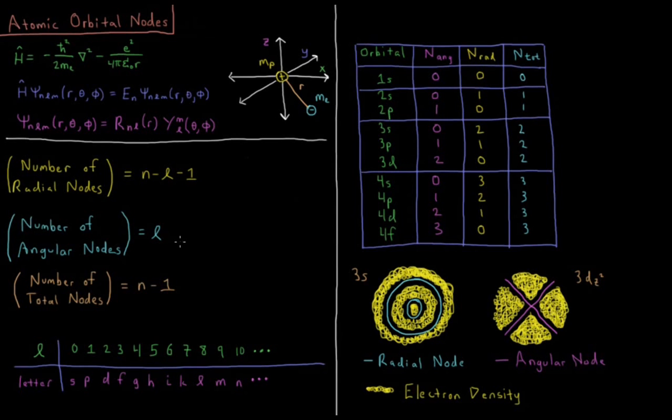For 2P, we have one angular node, L equals one for P, N equals two. So we have zero radial nodes and one total node. 3S has two radial nodes, 3P has one radial node, and 3D has zero. But 3P has one angular node and 3D has two, so all of the N equals three level have two total nodes.